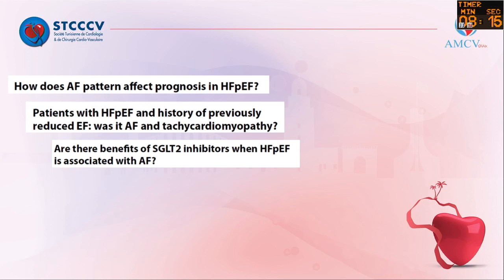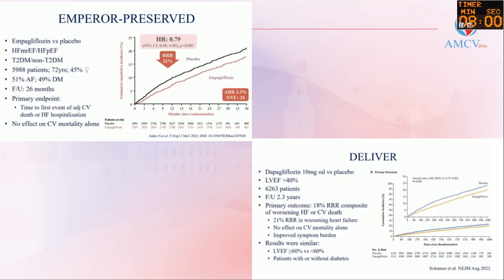The third question, which was addressed in the previous session, is the benefit of SGLT2 inhibitors in HFpEF — and how about the benefit in patients who have both HFpEF and atrial fibrillation? Looking at the subgroup analyses of the two main trials, DELIVER and EMPEROR-Preserved, there is no impact of the presence or absence of atrial fibrillation on the benefit of SGLT2 inhibitors. In fact, the benefit may even be higher in patients with atrial fibrillation, so these patients should receive an SGLT2 inhibitor today.